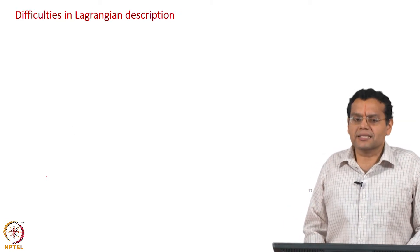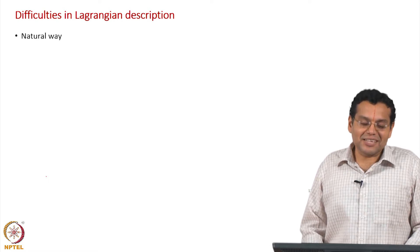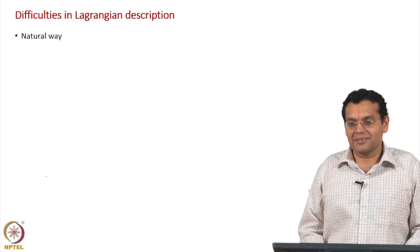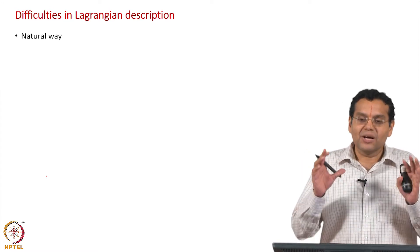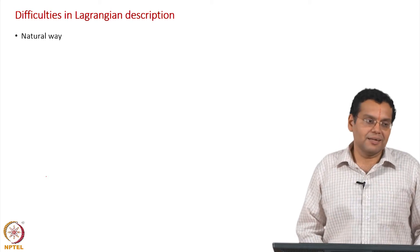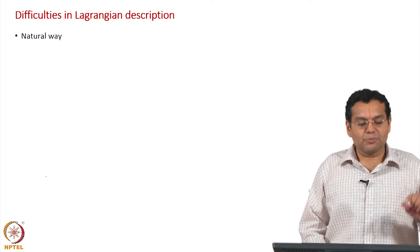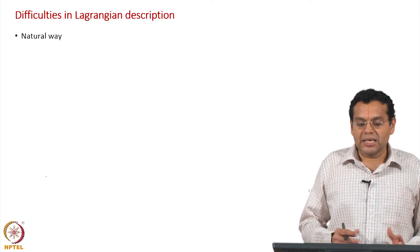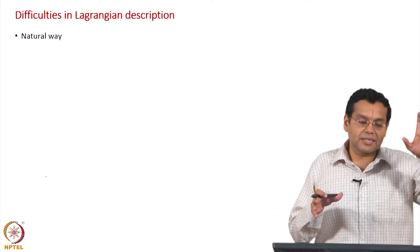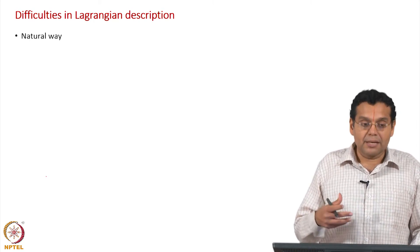What are the difficulties in Lagrangian description? First, note that Lagrangian is actually the natural way. This is why in the summary slide I listed Lagrangian first and then Eulerian. If you want a natural sequence, you would discuss Lagrangian first and then Eulerian. The reason I discussed Eulerian first in the examples is that it is more easily understandable — placing a temperature sensor at a point and making a measurement is easy. Following a fluid particle and measuring its temperature is a bit more difficult to imagine.